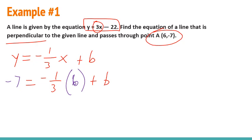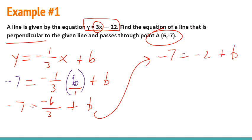And now I just need to solve for b after plugging in the x and the y value. So I'll do some math here. So negative 7. Let's make 6 a fraction. So we have negative 6 over 3, negative 6 over 3, plus b. So I have negative 7 equals negative 2 plus b. Add 2 to both sides. So b is going to equal negative 5.